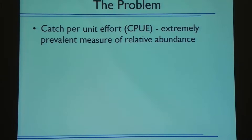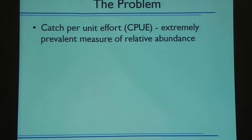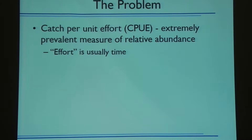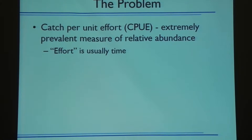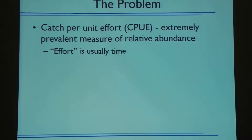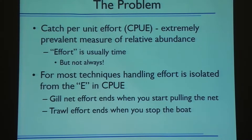So I'll start with the problem. We all use catch-per-unit effort — an extremely prevalent measure of relative abundance. In most cases, effort is time. In the electrofishing literature, that actually is not always the case; sometimes it's space. But for the next several slides I'm going to talk about effort in seconds. For most techniques, that works really well — the handling time, the time to untangle a fish from a gill net or get it out of a trap net, doesn't have anything to do with your sampling effort.